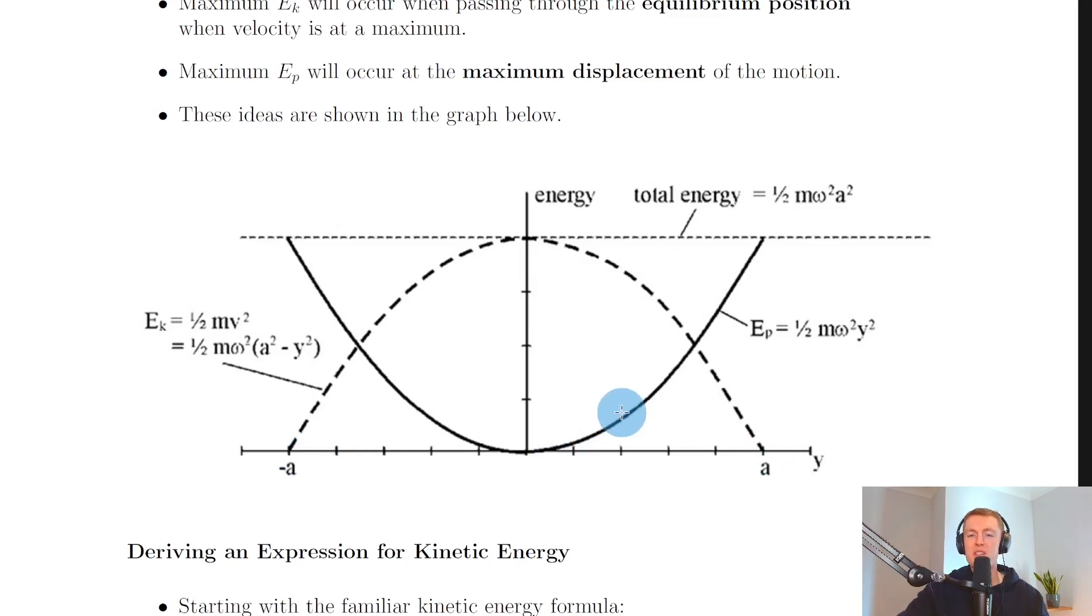However, we also have the potential energy displayed here, which must be this one, because you can see the potential energy is zero at a displacement of y equals zero, whereas it's maximum potential energy at the ends of the oscillation, and that's labeled EP here.